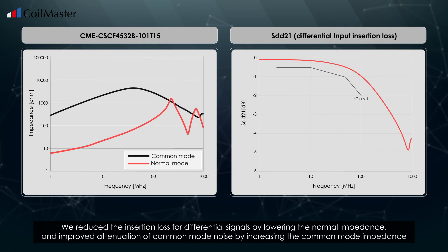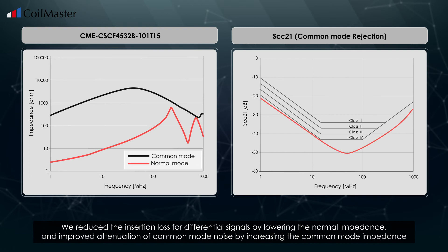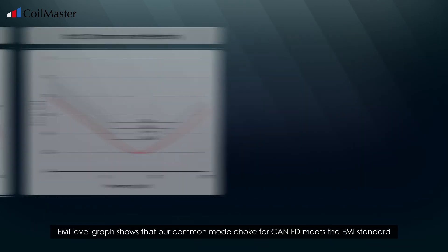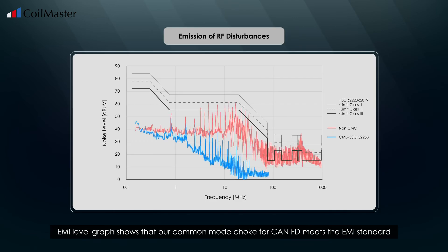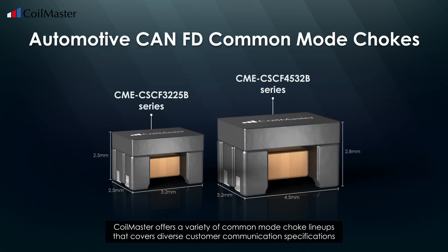We reduced the insertion loss for differential signals by lowering the normal mode impedance, and improved attenuation of common mode noise by increasing the common mode impedance. The EMI level graph shows that our common mode choke for CAN FD meets the EMI standard. Coil Master offers a variety of common mode choke lineups that cover diverse customer communication specifications.